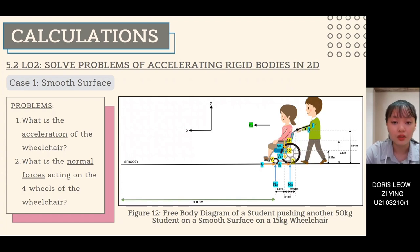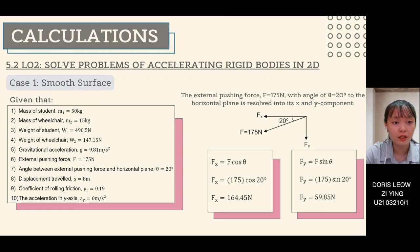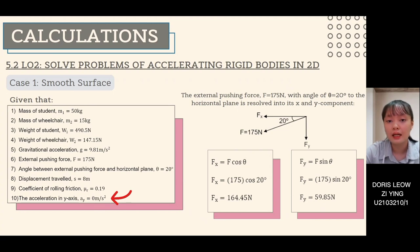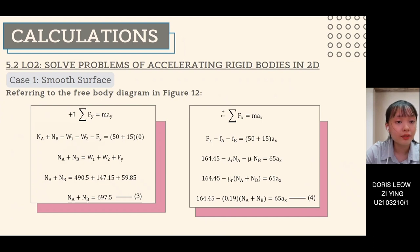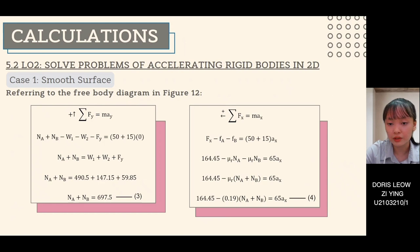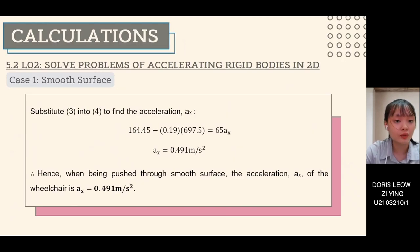For case 1, the external pushing force is assumed as 175 N and the coefficient of rolling friction as 0.19, with ay equals 0 m/s². The pushing force is resolved into x and y components using trigonometry. Applying summation of fy equals m·ay gives equation 3, and summation of fx equals m·ax gives equation 4. Substituting equation 3 into equation 4 yields an acceleration of 0.491 m/s².